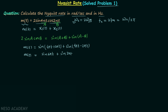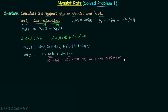Now we calculate ωm by comparing the angular frequencies in the two signals. For sin(6πt), ω1 = 6π rad/s. For sin(2πt), ω2 = 2π rad/s. Since ω1 is greater than ω2, ωm = ω1 = 6π radians per second.